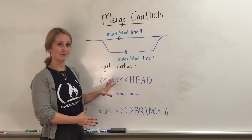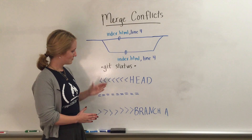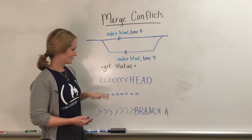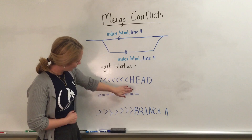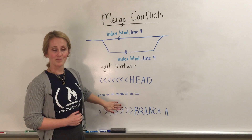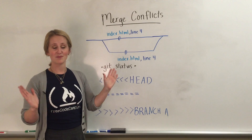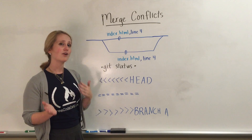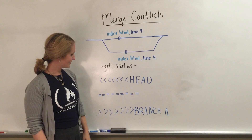Once you find the merge conflict markers, all you need to do is pick the version of code that you'd like to keep, and get rid of the merge conflict markers. One version will be above the equal signs, and the other will be below. You can pick one, delete them both, or create something totally new. Git doesn't care. Just make sure the code looks the way you want it to, and get rid of the merge conflict markers.